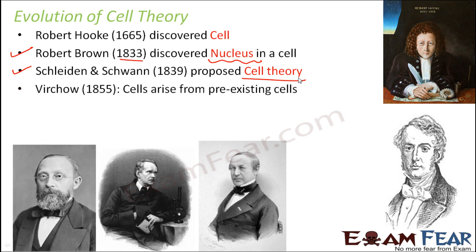After a couple of years, in 1855, scientist Virchow gave some modifications to the existing cell theory which was earlier given by Schleiden and Schwann. Virchow made modifications saying that cells arise from pre-existing cells. That means new cells will arise or originate from already existing cells. These were some of the advancements in the field of cell biology.